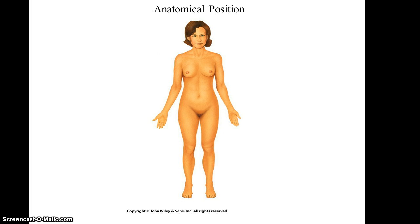So now we're looking at the anatomical position. This is a very specific position that is referred to whenever you talk about the anatomy of the human body. Specifically, this position is of a person standing up on their feet, facing forward, with their palms also facing forward. This is very important to remember — this is the position you should refer to when talking about parts of a human body, no matter how that body is actually positioned.